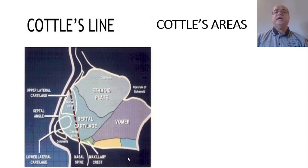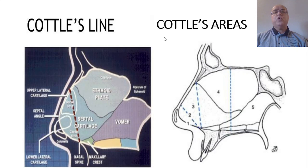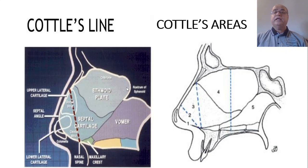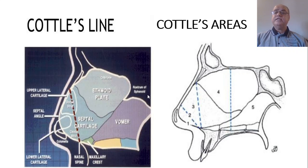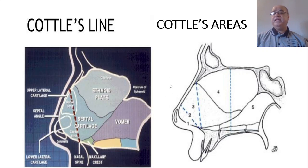According to Cottle's areas, the nasal septum is divided into five areas. Area one is the nostril. Area two is the nasal valve area, which is the narrowest part of the nose. Area three is beneath the bony and cartilaginous vault, also called the attic. Area four is the anterior aspect of the nasal cavity including the heads of the turbinates and the infundibulum. Area five is the posterior aspect of the nasal cavity including the tails of the turbinates.